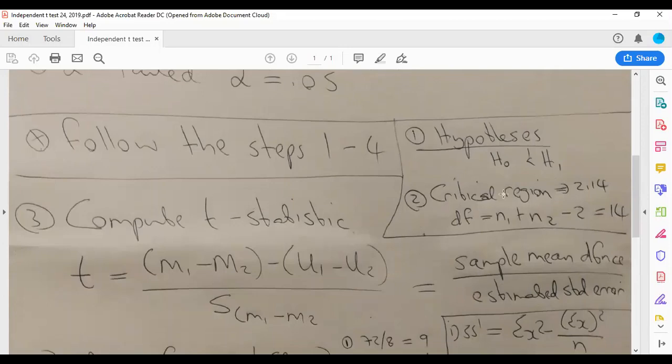Step number two, you do the critical region by calculating the degrees of freedom first. So it's n, we have 16 plus 16 minus 2, that's 14. If you go to the back of the textbook at 14 and that is a two-tailed, you're going to get 2.14. That 2.14 I'm going to use to make a decision. So this is the critical region.